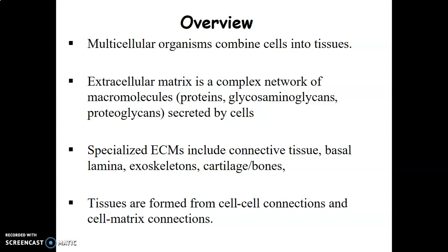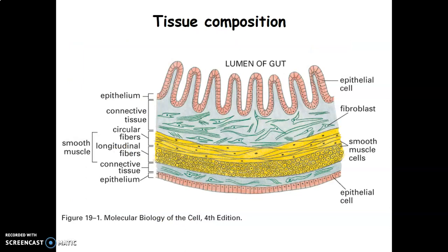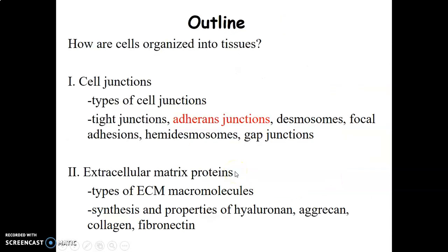We have specialized extracellular matrix that contains connective tissue. Tissues are usually formed from the connection between cell to cell and cell to matrix. Looking at the GIT, you can see the epithelium, connective tissue, the muscle, then back to epithelium, which is the serosa. Cells are organized with junctions in between them — tight junctions, adherens junctions, desmosomes, focal adhesions, hemidesmosomes, and gap junctions.